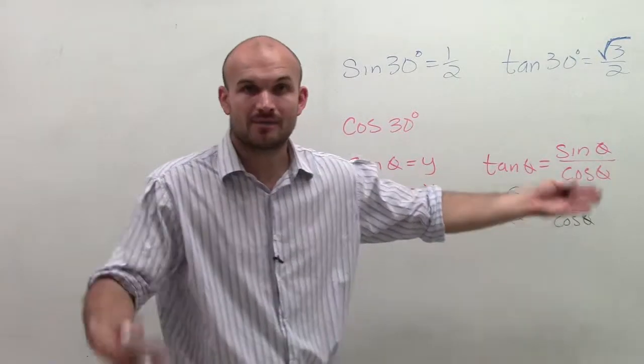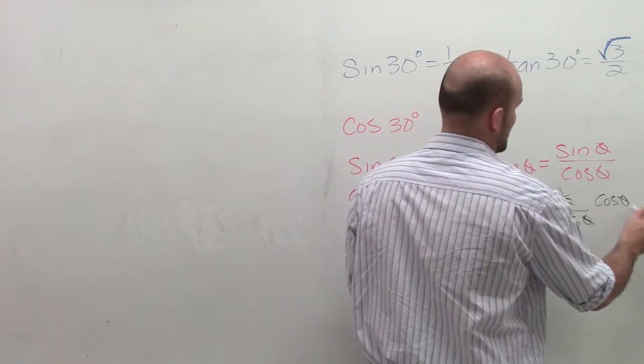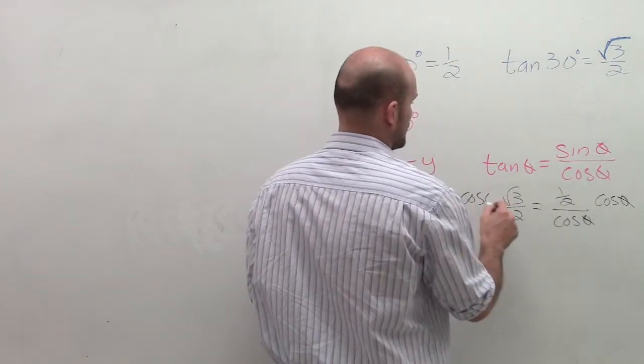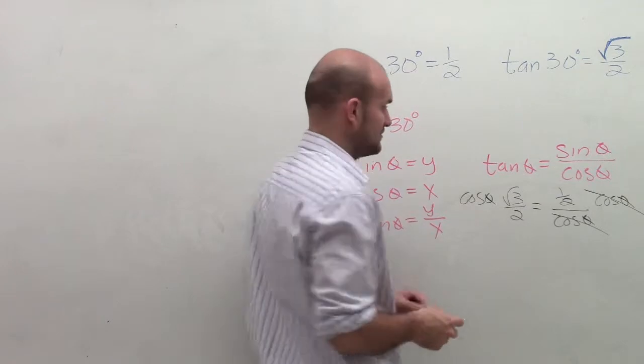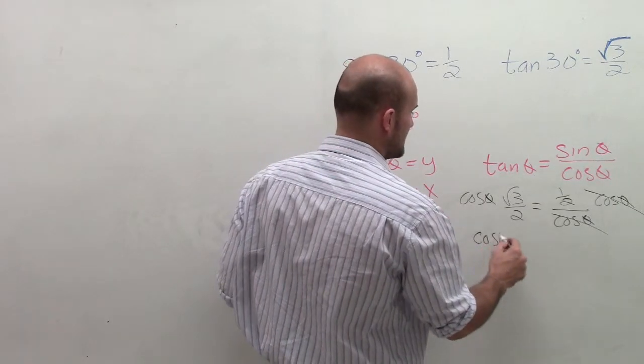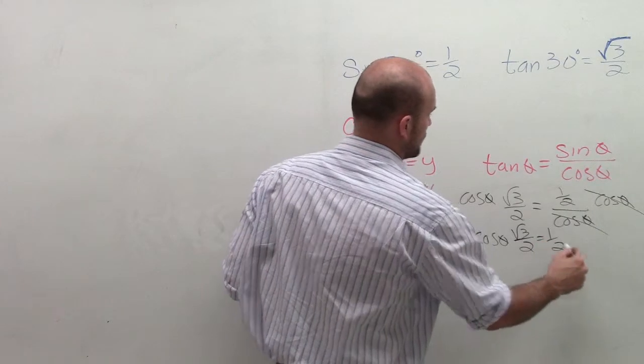So remember, whenever you have something on the bottom, you can multiply by that denominator to get it off the bottom. So I'm going to multiply by cosine of theta on both sides. Over here, we can say they divide out to 1. So I'm left with cosine of theta times square root of 3 over 2 equals 1/2.